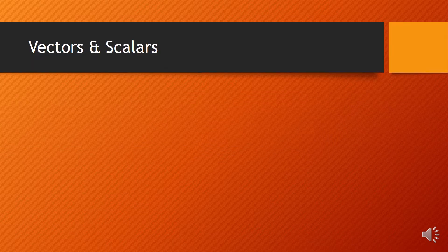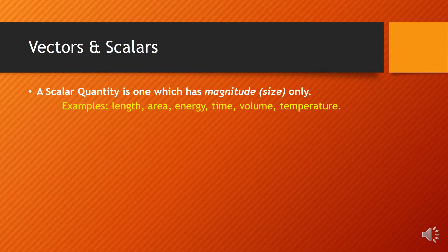Vectors and scalars. A scalar quantity is one which has magnitude or size only, and examples of scalars are length, area, energy, time, volume, and temperature.